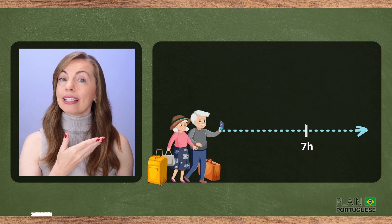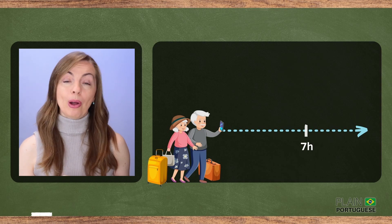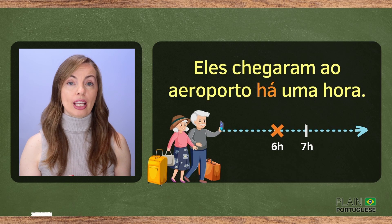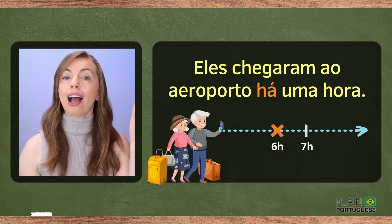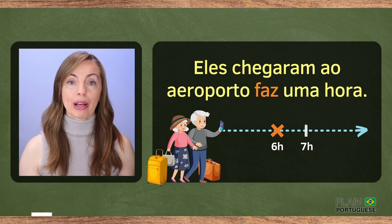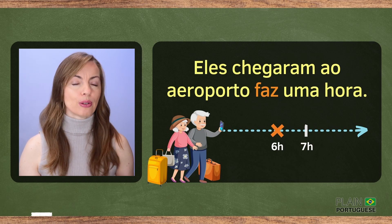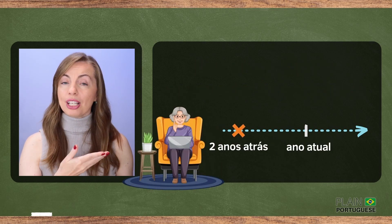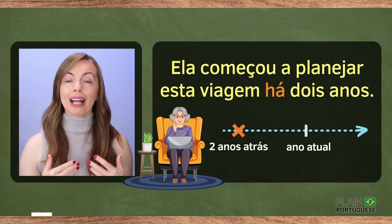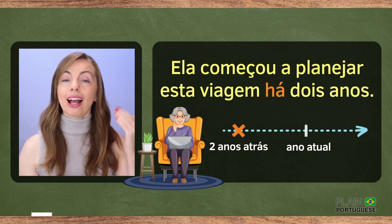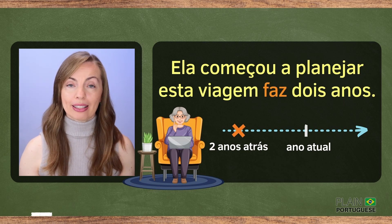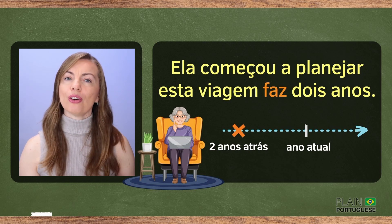For example, it's 7 o'clock now. They arrived at the airport one hour ago: Eles chegaram ao aeroporto há uma hora. Or: Eles chegaram ao aeroporto faz uma hora. She started planning this trip two years ago: Ela começou a planejar esta viagem há dois anos. Or: Ela começou a planejar esta viagem faz dois anos.